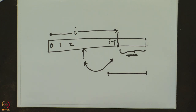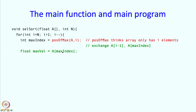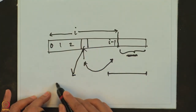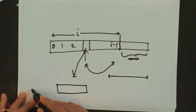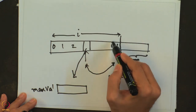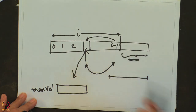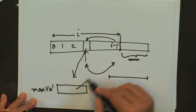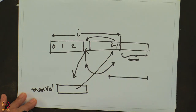How is the exchange done? We copy the value at max_index into a variable called max_val. Then we copy the value at i-1 into the max_index position, and finally we copy max_val into the i-1 position. The exchange is done. That is our selection sort.